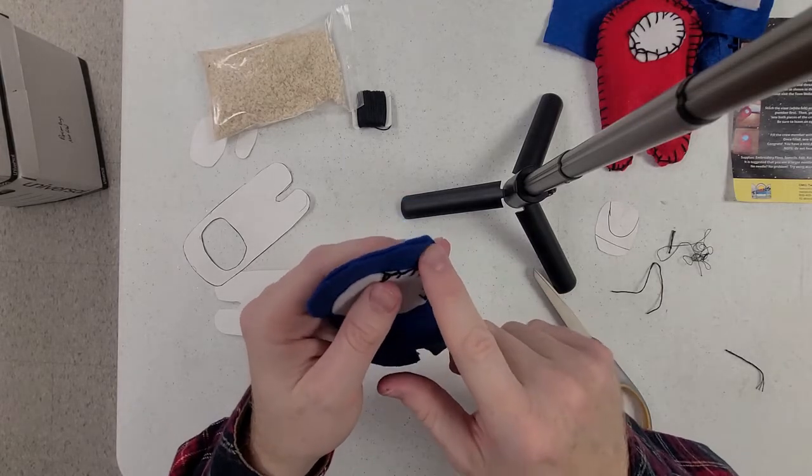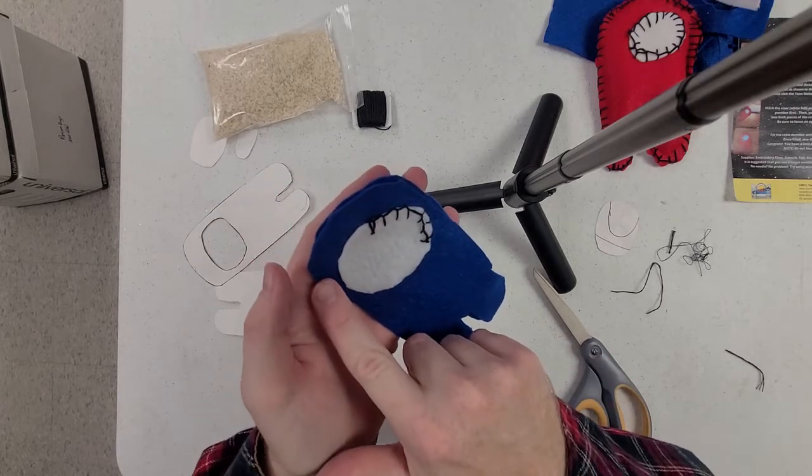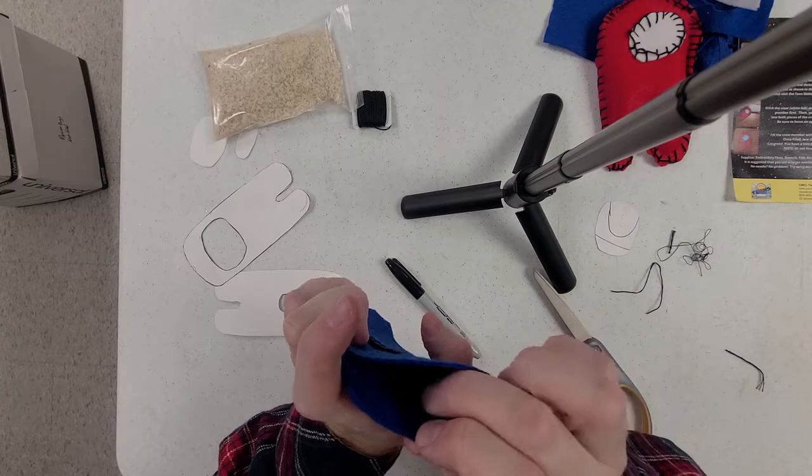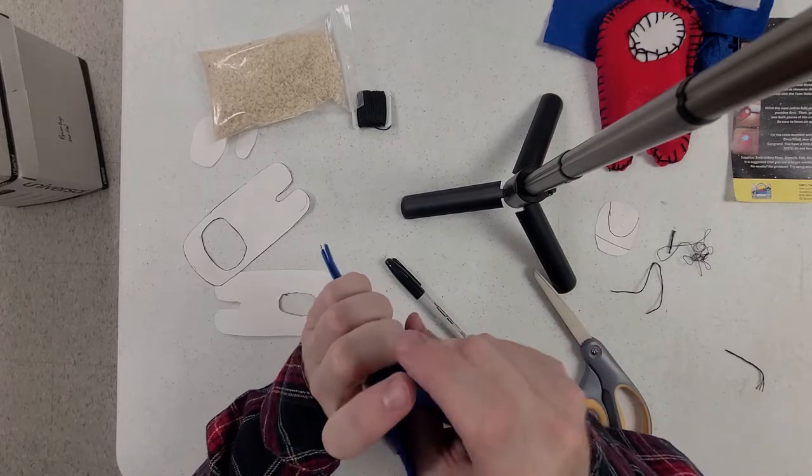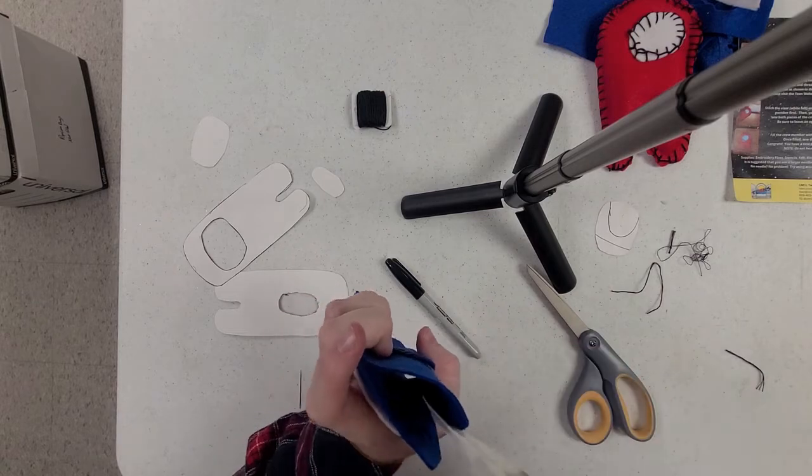Then I would recommend you start about here. Stitch all the way around until you get up to about here. And once you do that, you're going to open your guy up a little bit and take your bag of rice and you're going to pour it in.